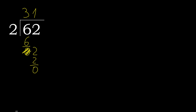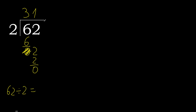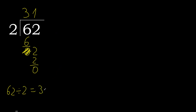0 — there is no remaining number, therefore we finish. 62 divided by 2 is 31.